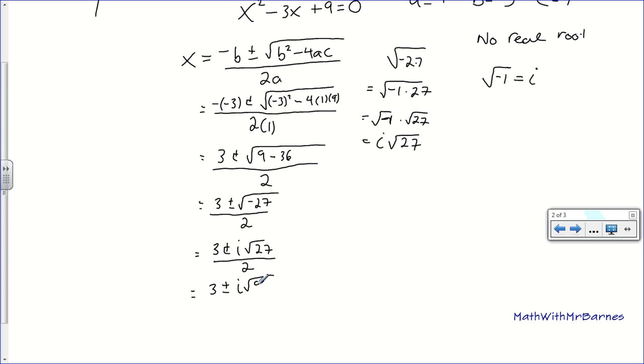So, it becomes, underneath the root becomes 9 times 3, all over 2. And I'm just going to move up here so I don't run out of space. And I have 3 plus or minus, the square root of 9 is 3. So, that's going to come inside. So, it's 3i root 3, all divided by 2. And there it is. That's my exact roots for this guy.